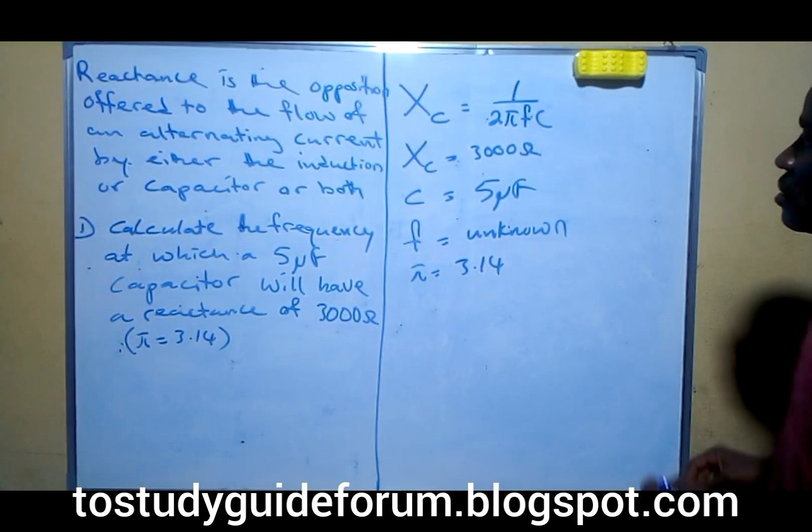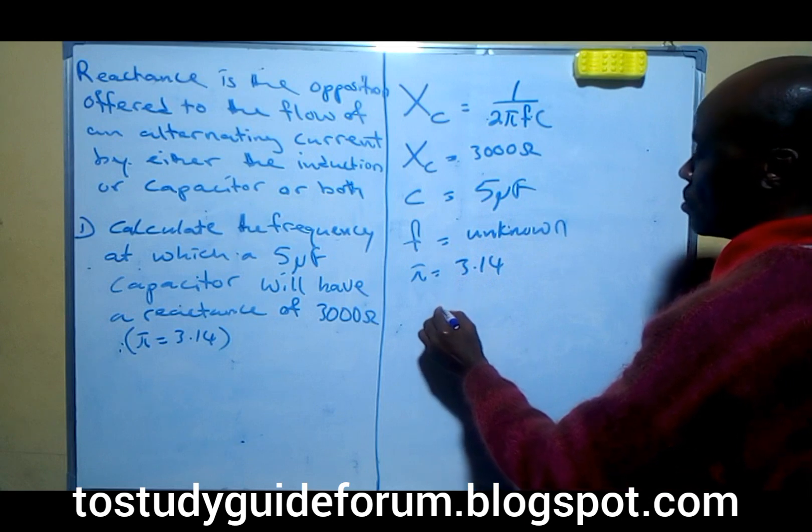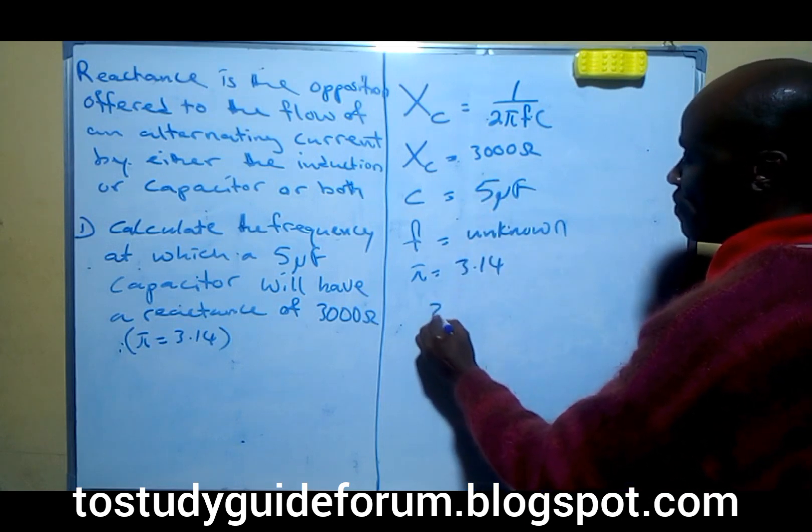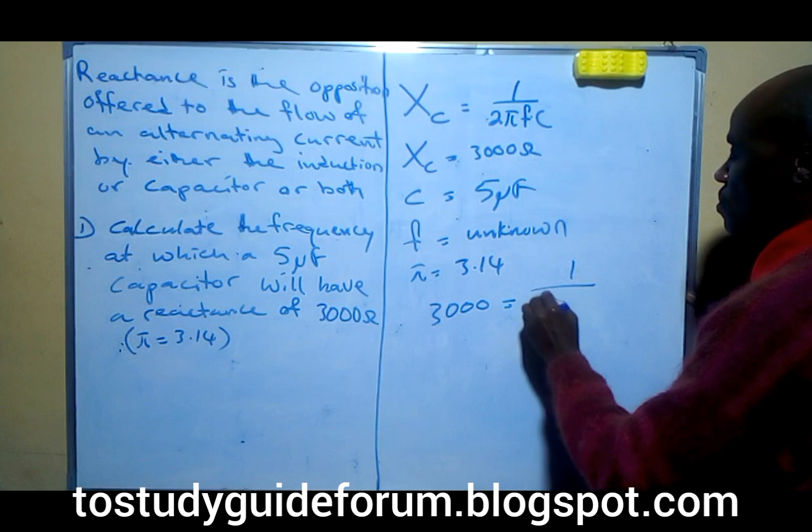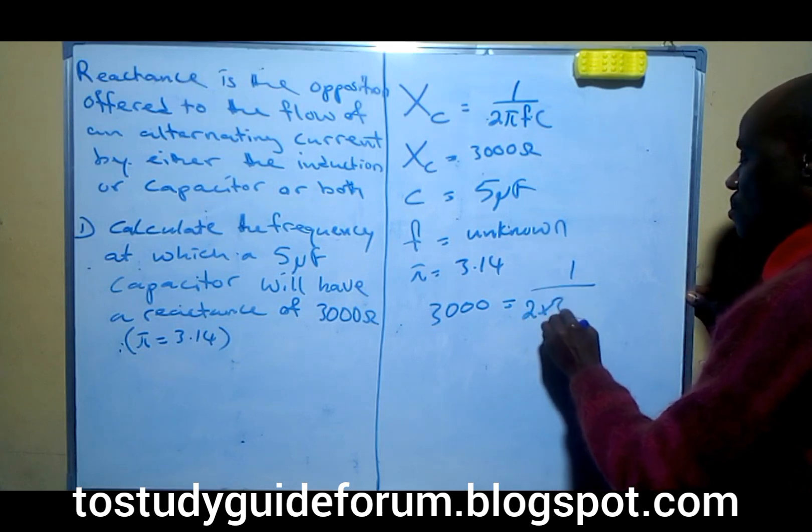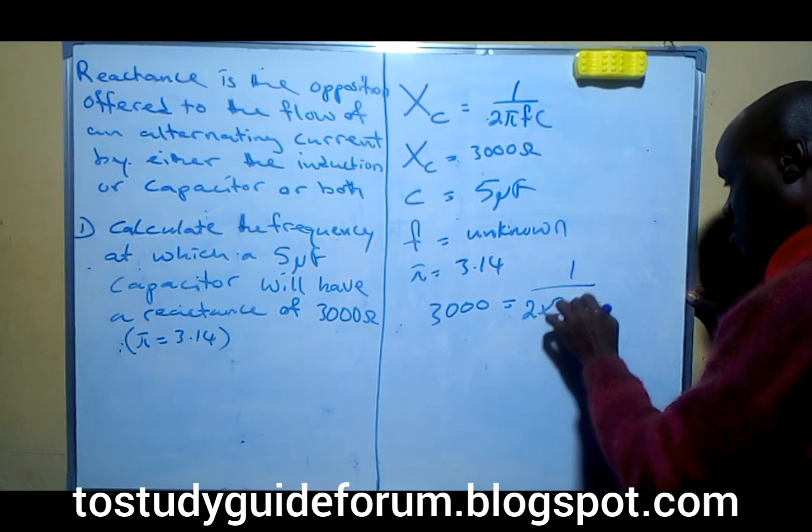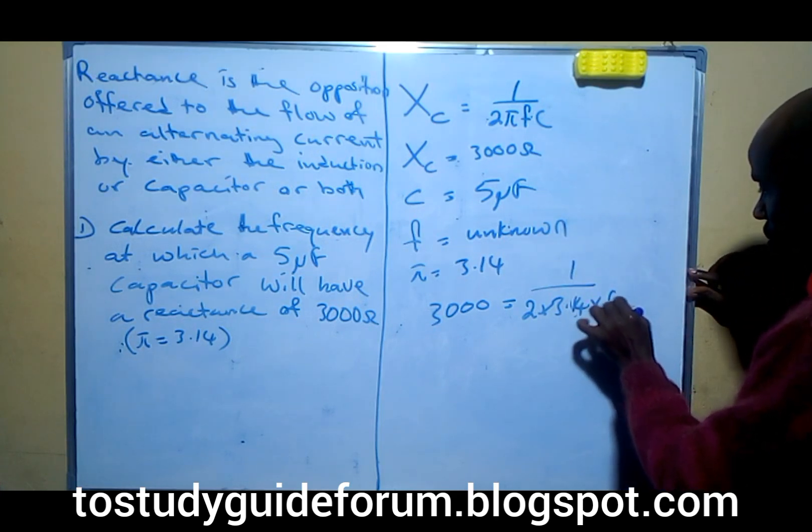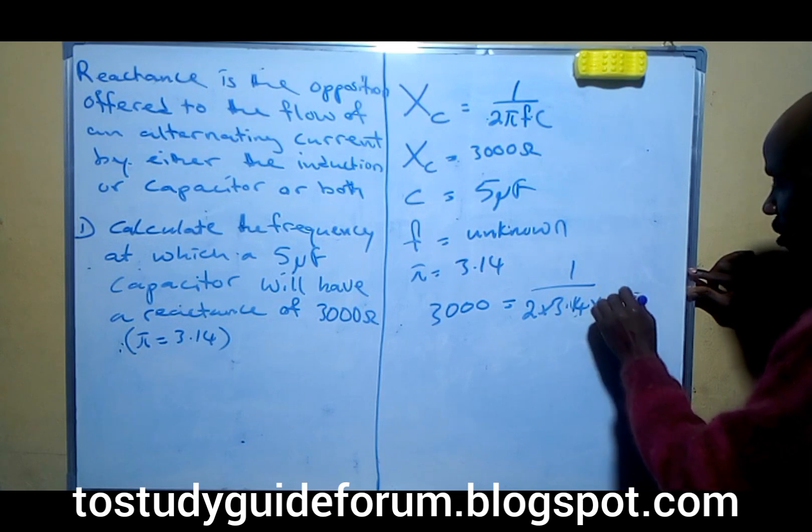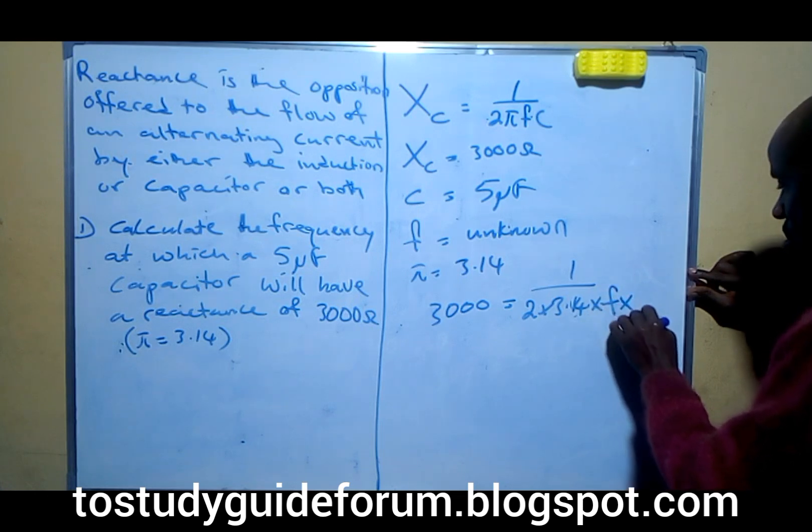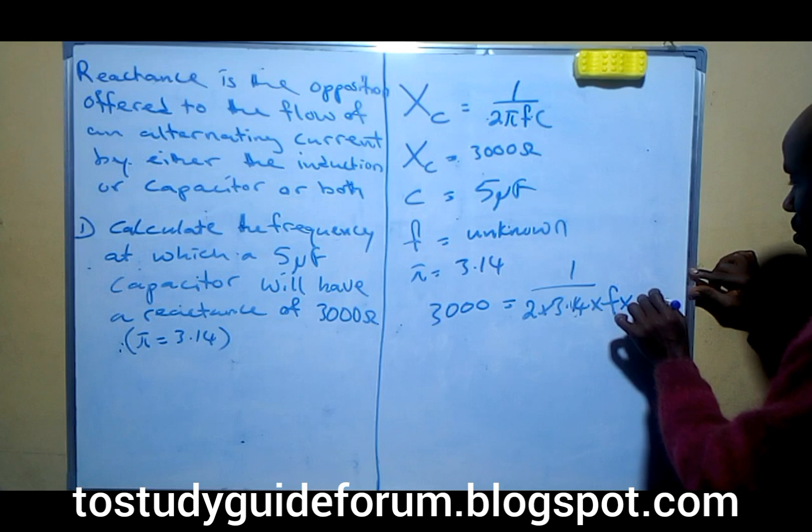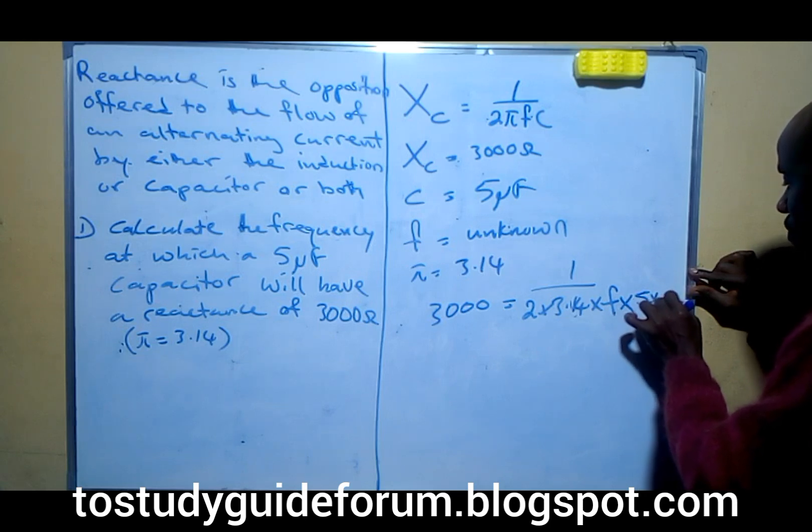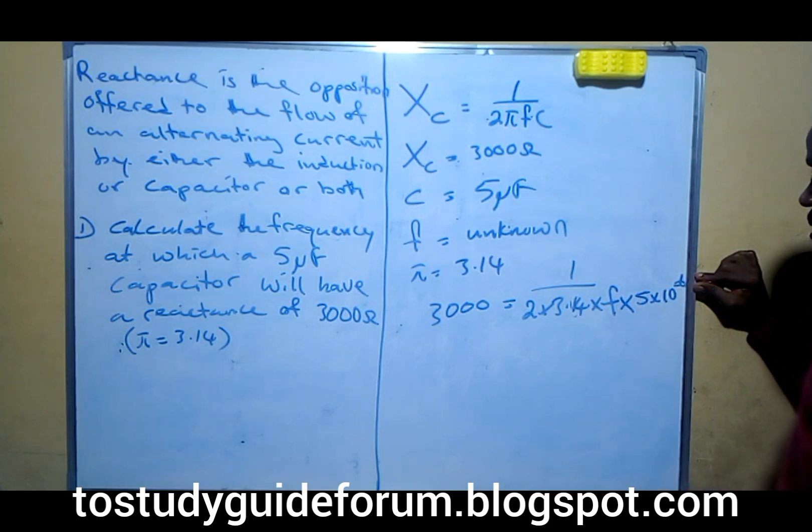So now to solve this, we substitute. We don't know the frequency so we put f, and the capacitor is 5 × 10^-12. So we are going to